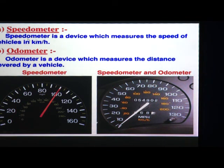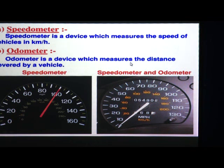An odometer is a device which measures the distance covered by a vehicle. In the first picture it is a speedometer — in a speedometer this needle shows only speed, with markings at 0, 20, 40, 60, 80, 100, 120, 140 and 160.